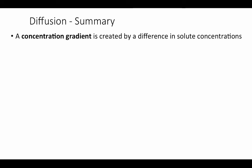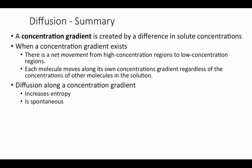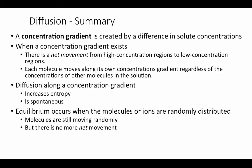A concentration gradient is created by a difference in solute concentrations. When it exists, there is net movement from high to low concentration regions. Each molecule moves along its own concentration gradient regardless of other molecules in solution — white and red molecules each moved along their own gradients independently. This process of diffusion increases entropy — it increases disorder. Because it increases entropy, it is spontaneous and requires no energy input. Equilibrium occurs when molecules are randomly distributed throughout the available volume — molecules are still moving, but there is no net movement. This is passive transport.